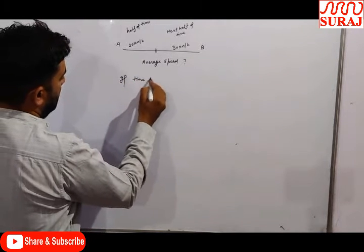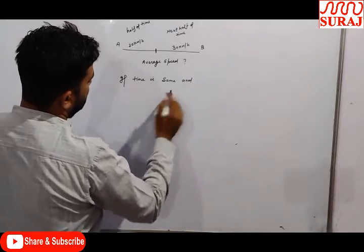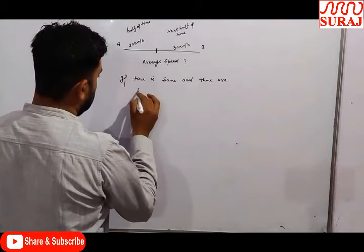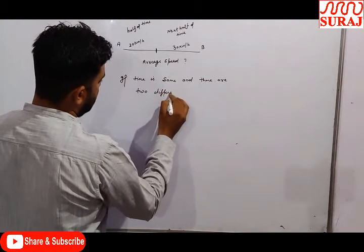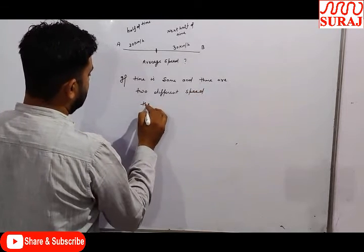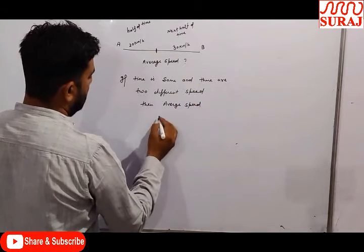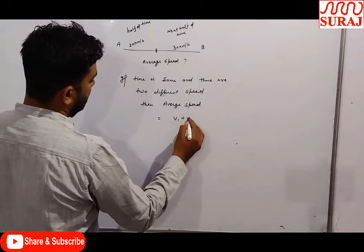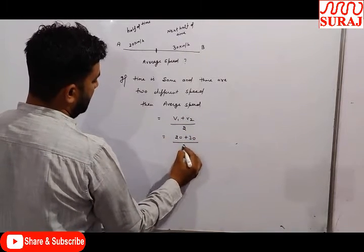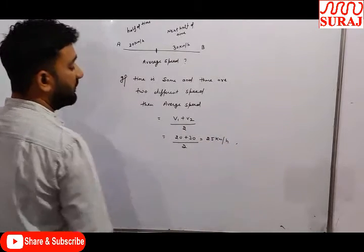If the time is the same and there are two different speeds, then average speed equals v1 plus v2 divided by 2. So 20 plus 30 divided by 2 equals 25 km per hour. This shortcut applies when time intervals are equal.